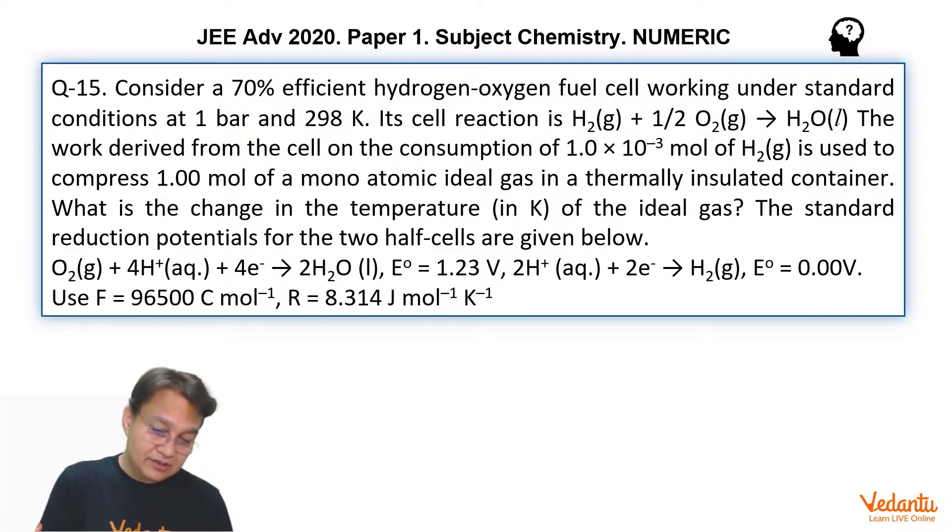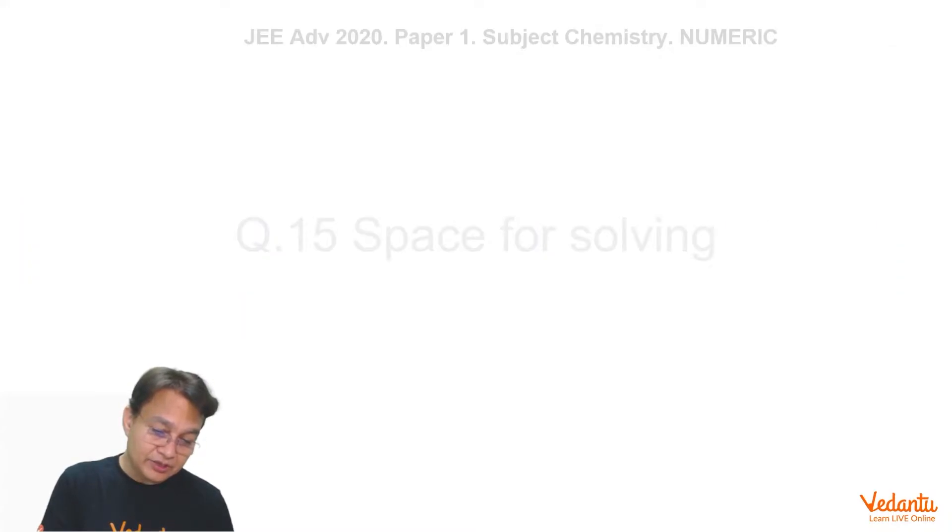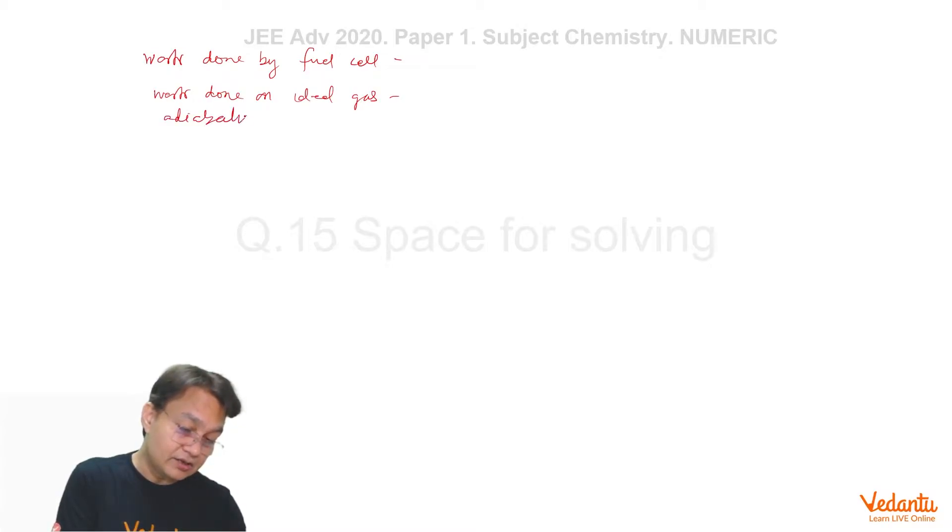So after going through this problem, let us divide this problem into some parts. So first of all in this problem we have to find out the work done by fuel cell and then this work is going to be delivered to the ideal gas and then next part will be work done on ideal gas in adiabatic process.